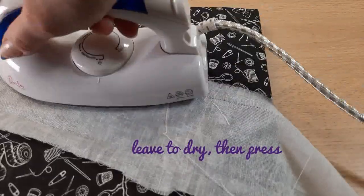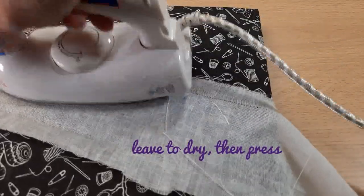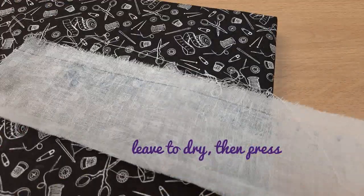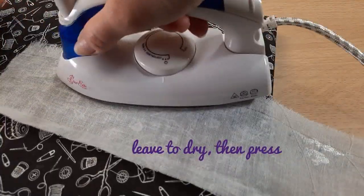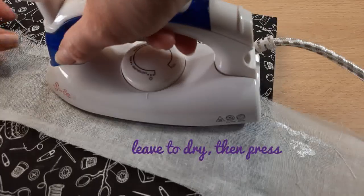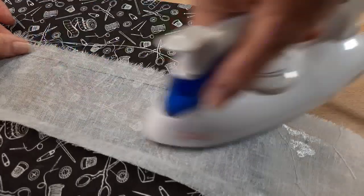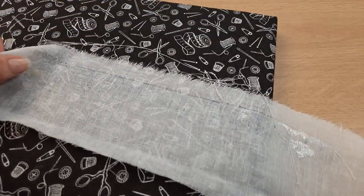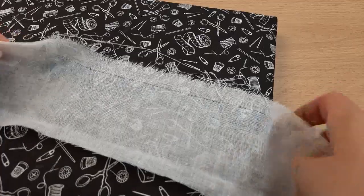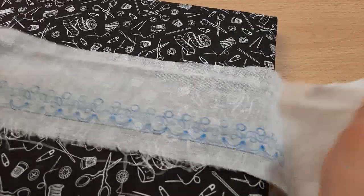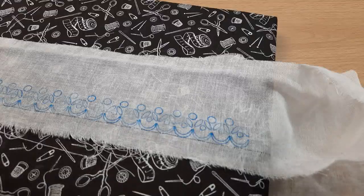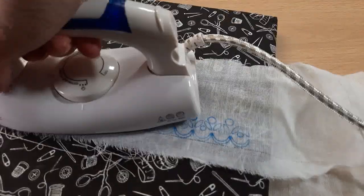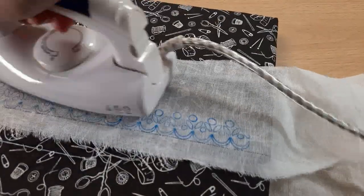Another thing that you can do with starch is if you pop it on a radiator in the winter you can get it to an almost dry state before you press. There we go. That's now got a little bit of the body which is helpful as well for the ironing.